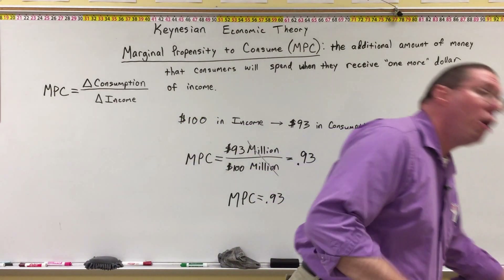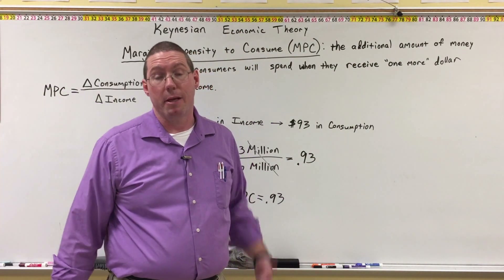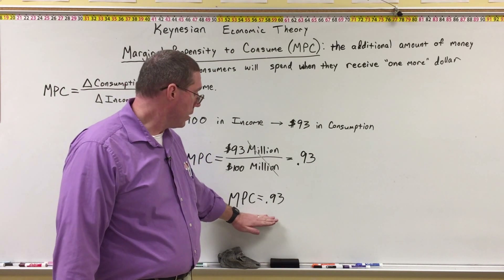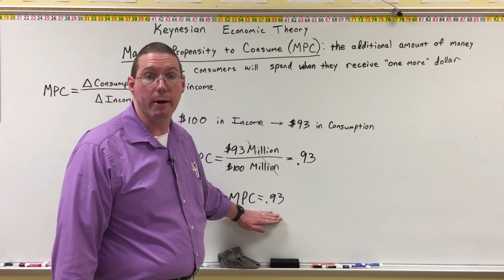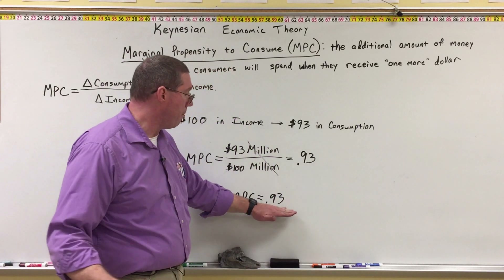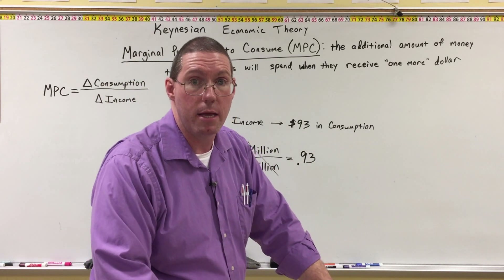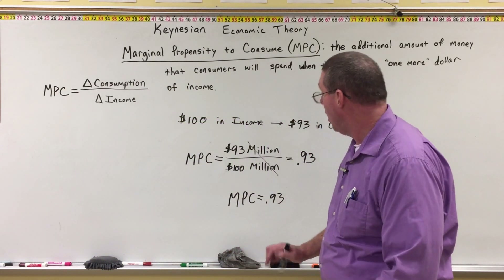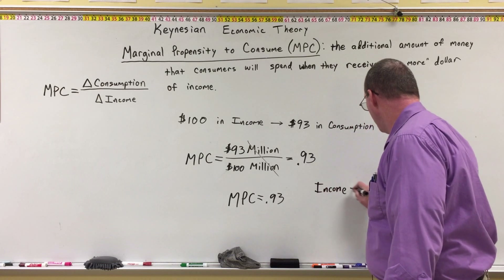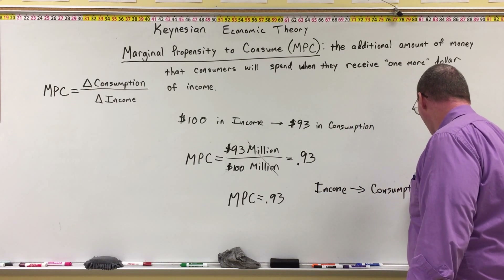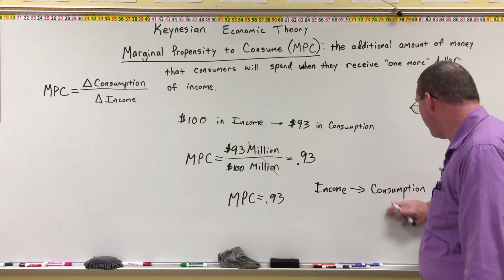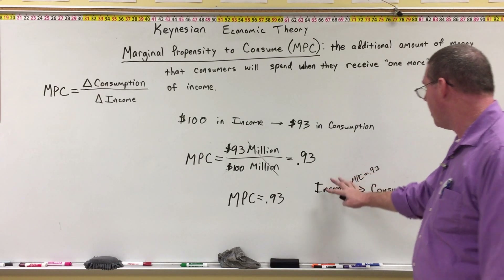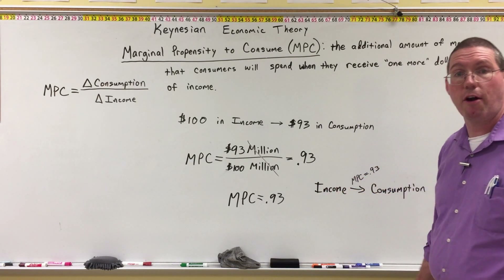This marginal propensity to consume would permeate the entire economy — at least that is basically what the theory is saying. It is a somewhat stable metric, or a somewhat stable multiplier. For every time income goes up in the economy, consumption will go up by this factor. As income changes and consumption changes, it happens according to the marginal propensity to consume. In this example, that is 0.93, and we can then predict what's going to happen to consumption based on whatever happens to income.